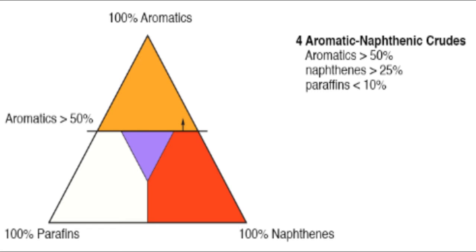Above that line, in the orange region in the triangle, the aromatic content is greater than 50 percent — that is the first boundary. The second boundary line defines an area where naphthenes are greater than 25 percent; you see the line on the triangle.